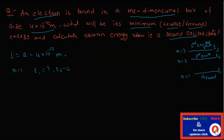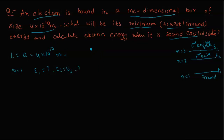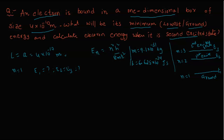We need to find E1, E2, and E3. The formula for a particle in a one-dimensional box is: En = n²h²/(8mL²), where m is the mass of the electron (9.1×10⁻³¹ kg) and h is Planck's constant (6.625×10⁻³⁴ J·s).